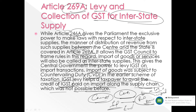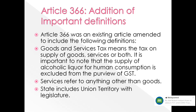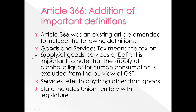Article 269A, in summary, allows the Centre to distribute tax collected by way of import or interstate supply to the states as well as to the Centre. Moving to Article 366, which was an existing article amended to include important definitions: 'Goods and Service Tax' means taxes on supply of goods or services or both — nothing to do with sale and purchase. Notably, the supply of alcoholic liquor for human consumption is excluded from the preview of GST. 'Services' refers to anything other than goods. 'State' includes union territories with a legislature.